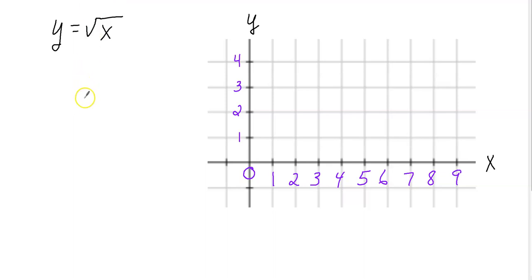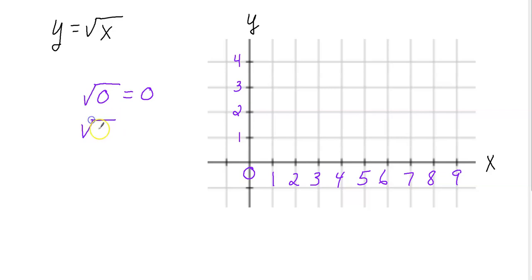So let's say we took the square root and replace x with zero. What's the square root of zero? That just means what number times itself is zero, and that's zero — zero times zero is zero. Now let's do the square root of one. What number times itself is one? That's one — one times one is one.